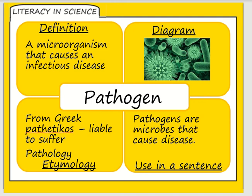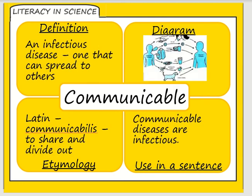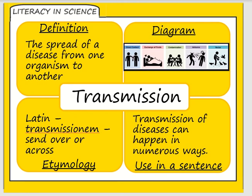A pathogen is a microorganism that causes infectious disease. You learned about viral pathogens yesterday; today you're learning about bacterial pathogens. Not all bacteria cause disease. Communicable diseases are those that are infectious and can spread from person to person, organism to organism, or sometimes between organisms. Transmission is the actual spread of the disease.